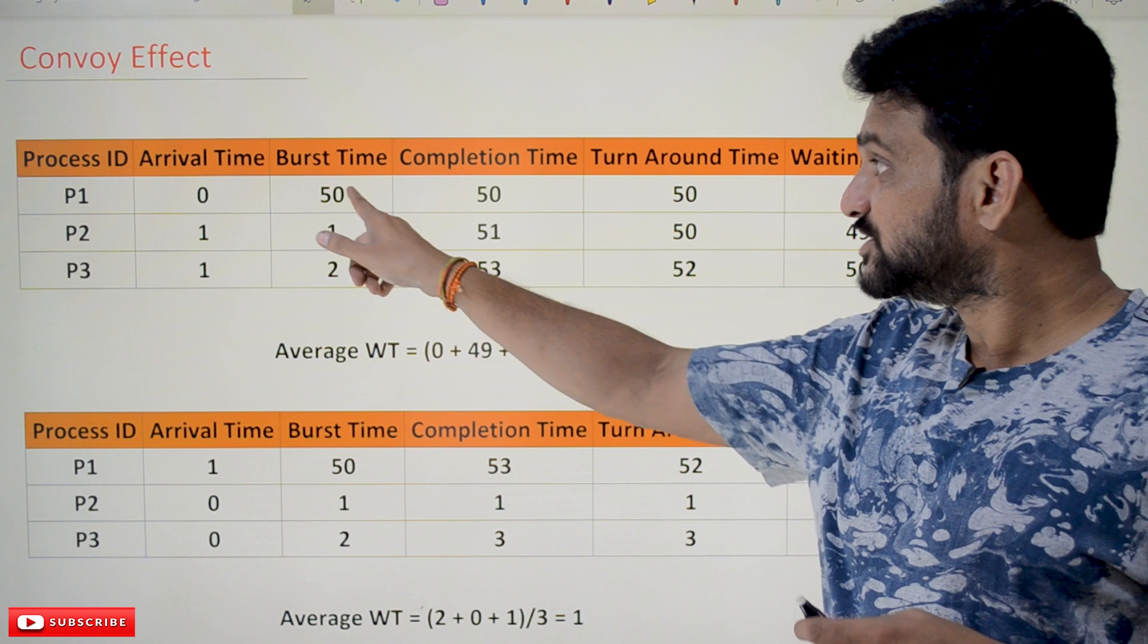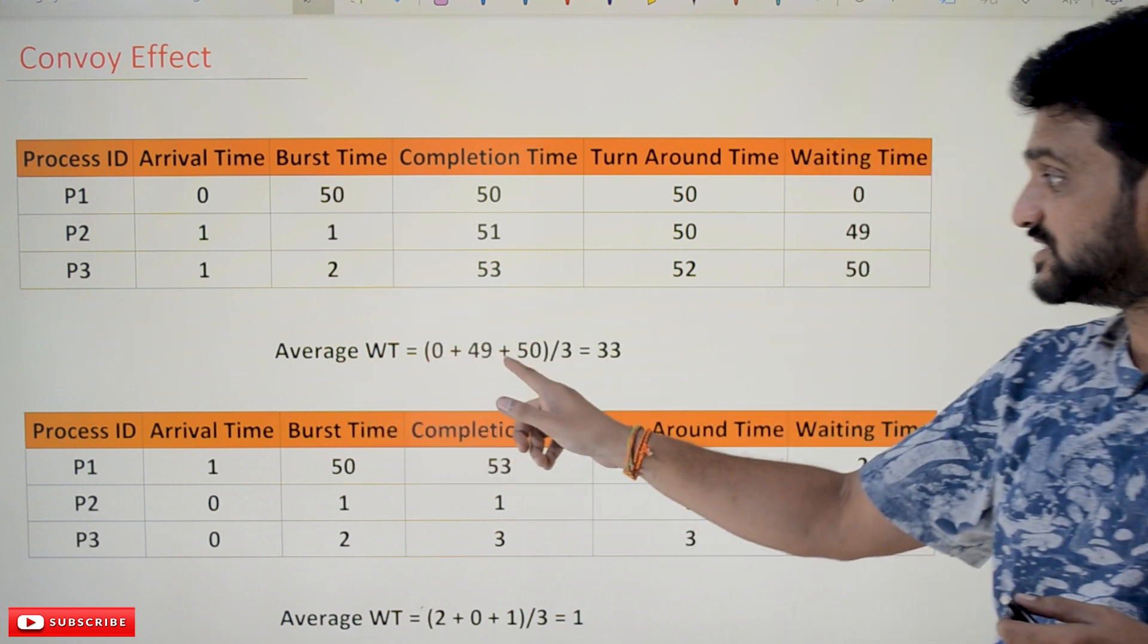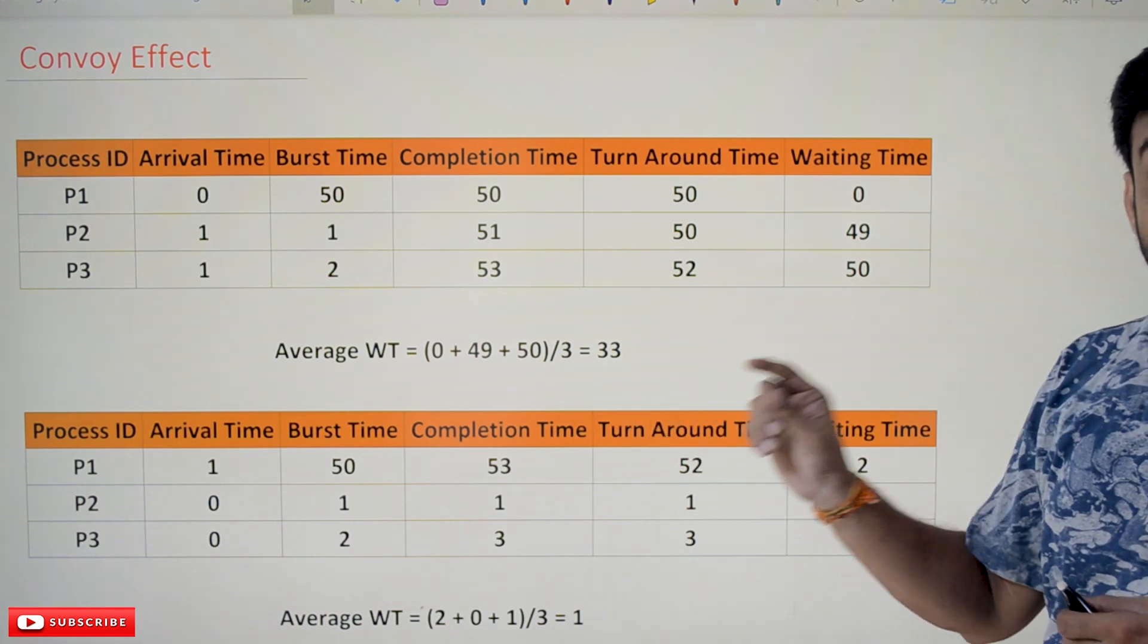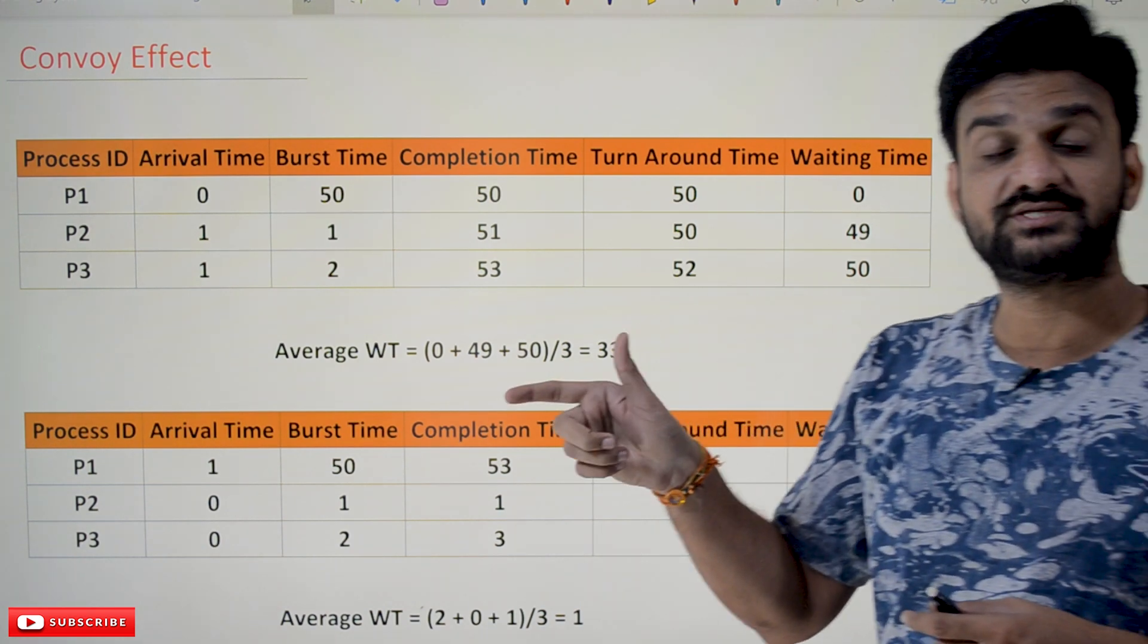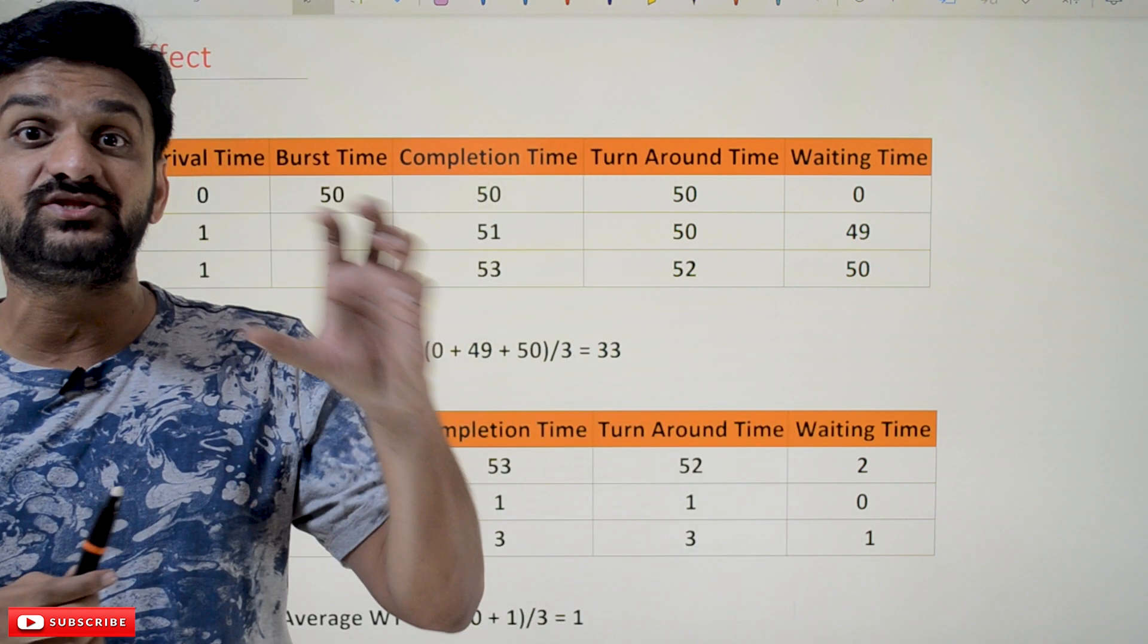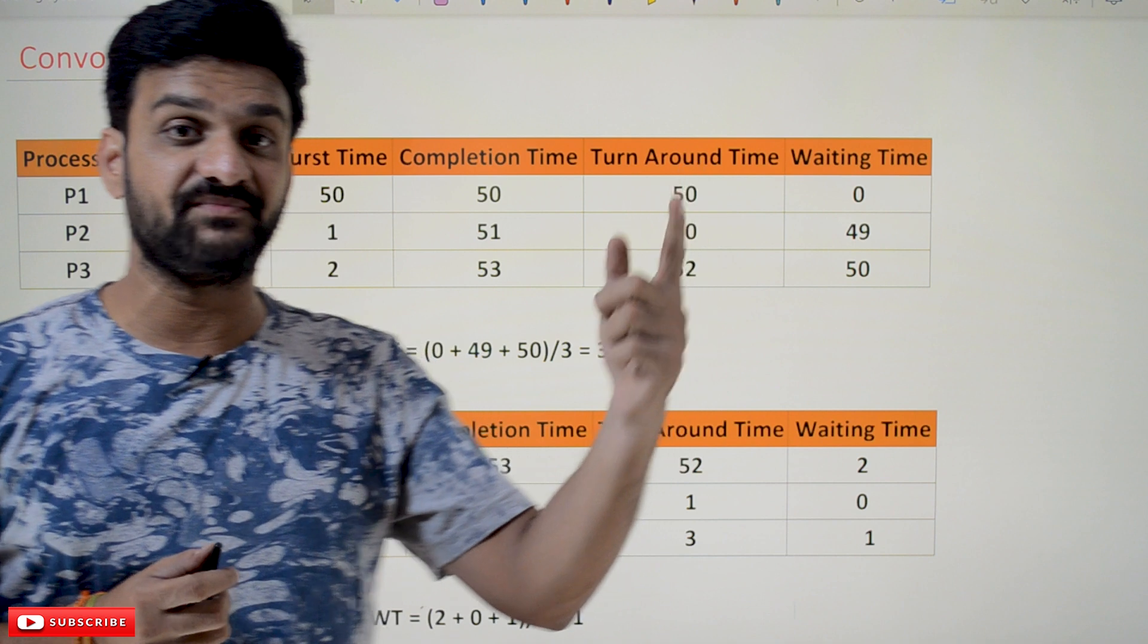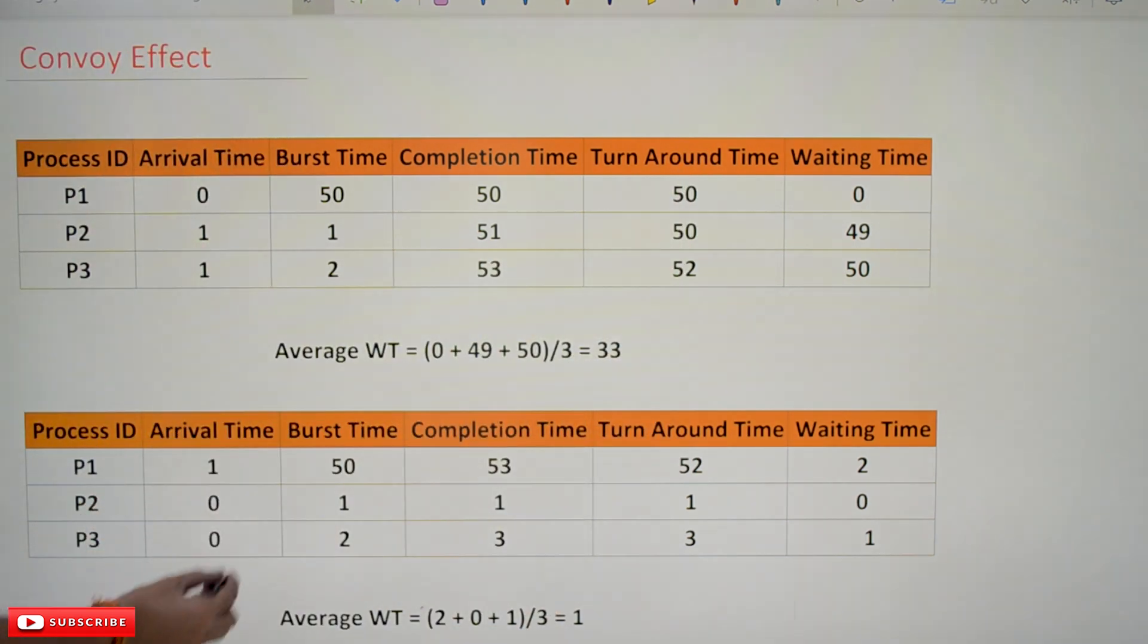Let's try to understand this. With these 50 units of burst time, the average waiting time is 33 units per process. Every process has to wait on an average of 33 units of time. We try to get that point—the average time is 33 units.